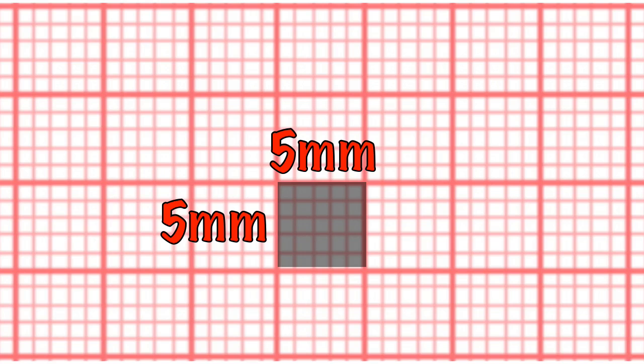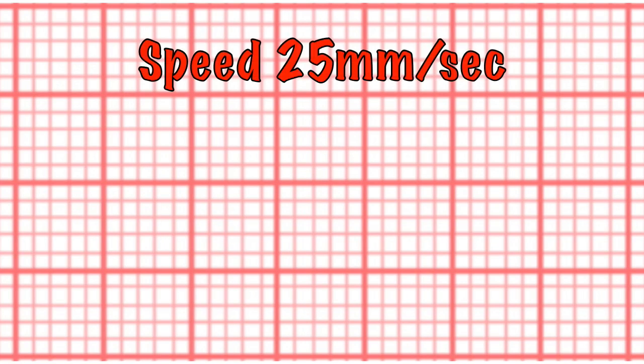ECG paper has lots of small squares on it, each one 1mm square, and they are grouped together to make larger squares of 5mm.